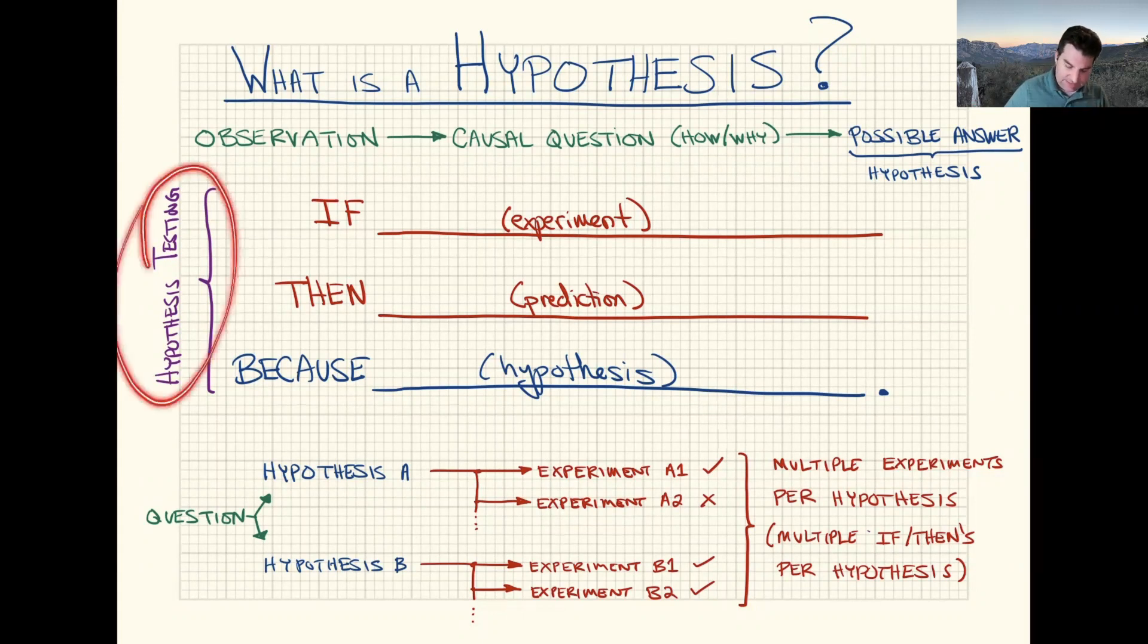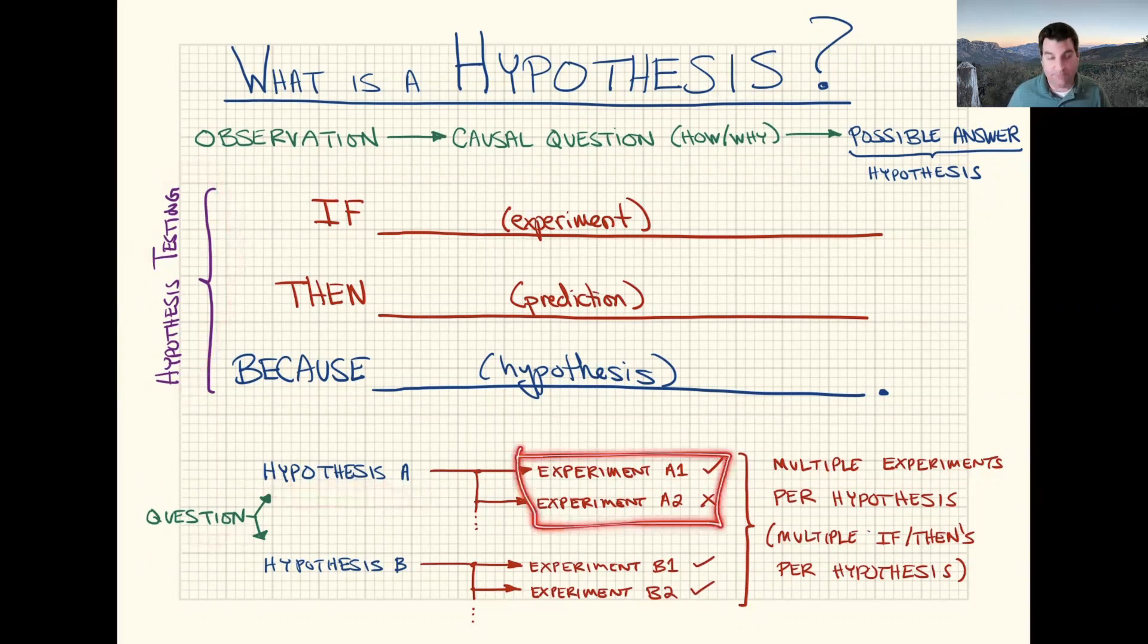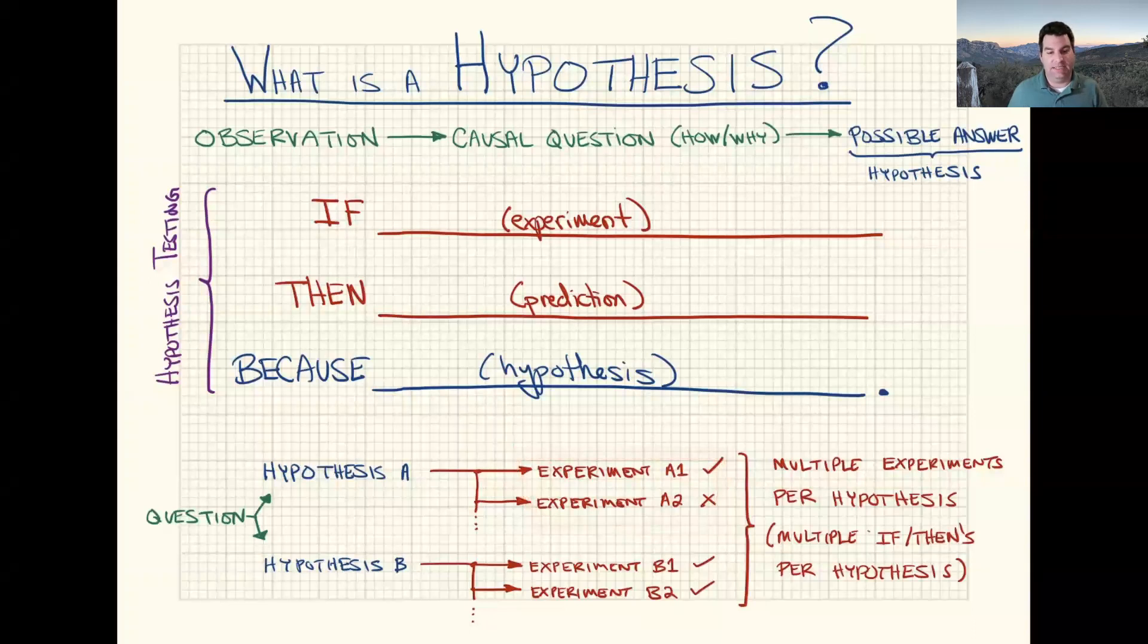So how does this hypothesis testing work? Well, we had our question. We came up with at least one hypothesis. Let's say in this case, vitamin E is important to the immune system. And now we want to run multiple experiments to test this hypothesis.